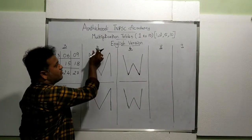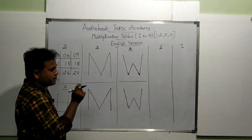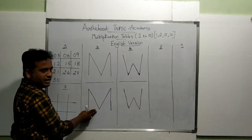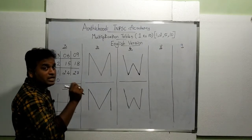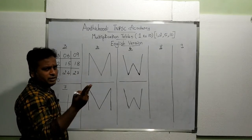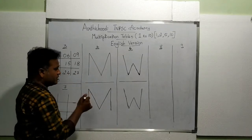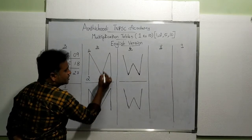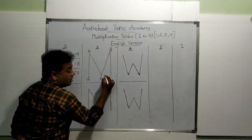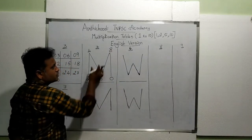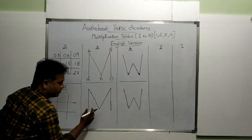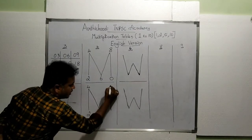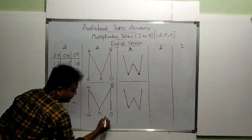Next we are going to write the fourth table. To write the fourth table, first you write the capital letter M two times. Next you need to know even natural numbers, or the second table: 2, 4, 6, 8, and instead of 10 you put 0. The same set of numbers goes in this M also: 2, 4, 6, 8, 0.